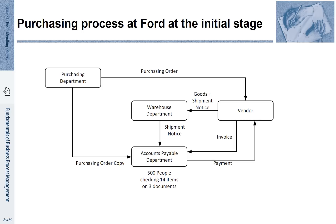While this process looks fine at a first glance, there were various problems. In essence, the accounts payable department had to make sure that three different documents were consistent with each other. In many cases, there were problems of inconsistency. For example, if a vendor had shipped a little bit less than what was ordered because they did not have enough in stock, the shipping notice would not be in line with the purchasing order, and the invoice would also not be in line. The accounts payable department then had to resolve this by telephoning the involved persons to confirm whether the deviation was acceptable, and if so, they would change the purchasing order and make the modified payment.